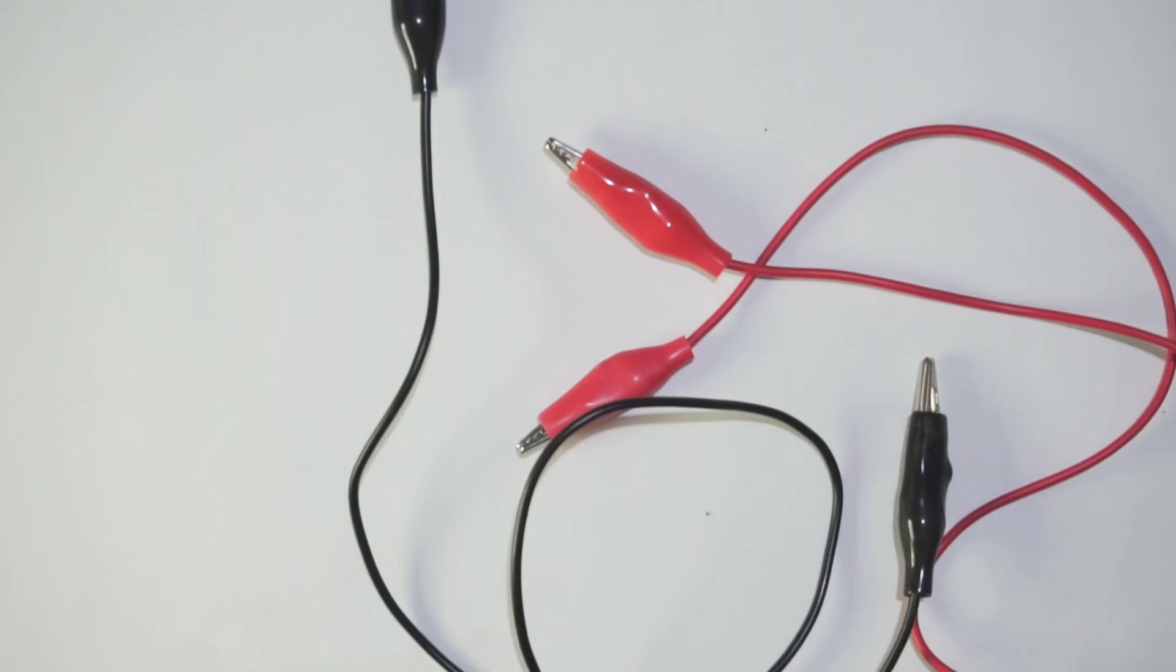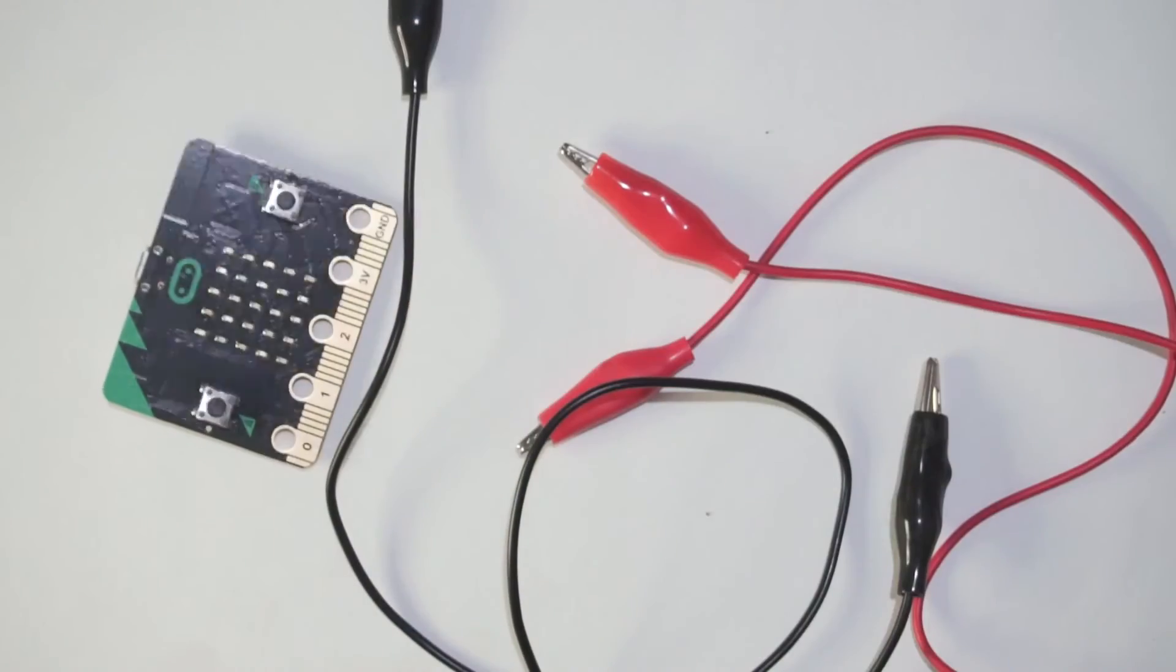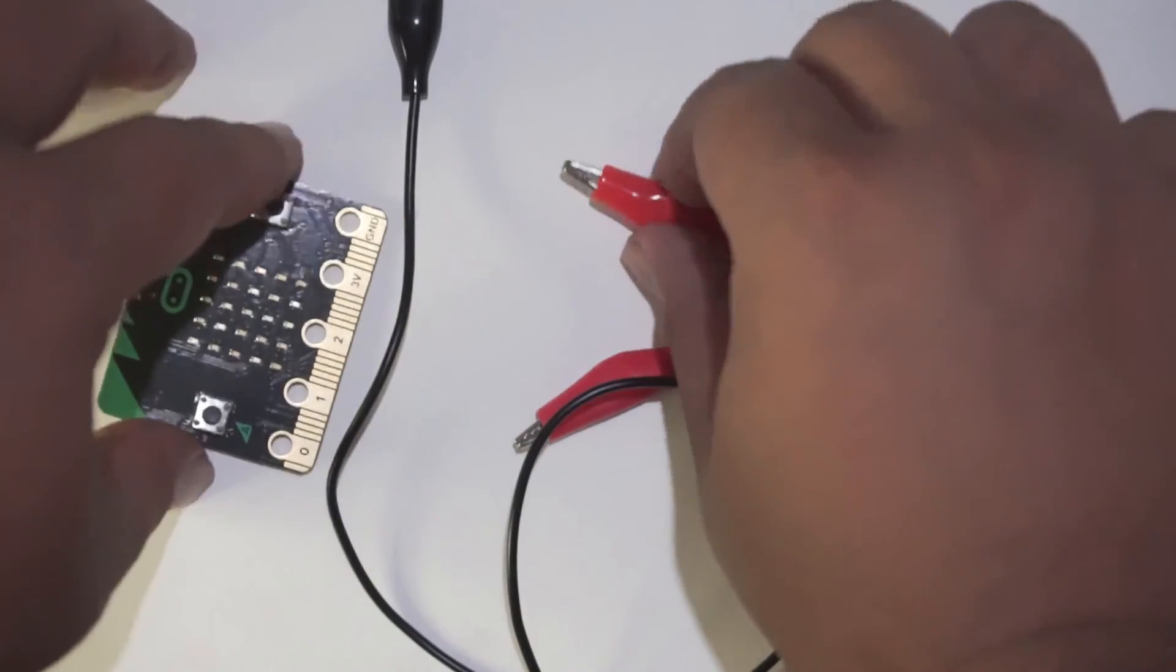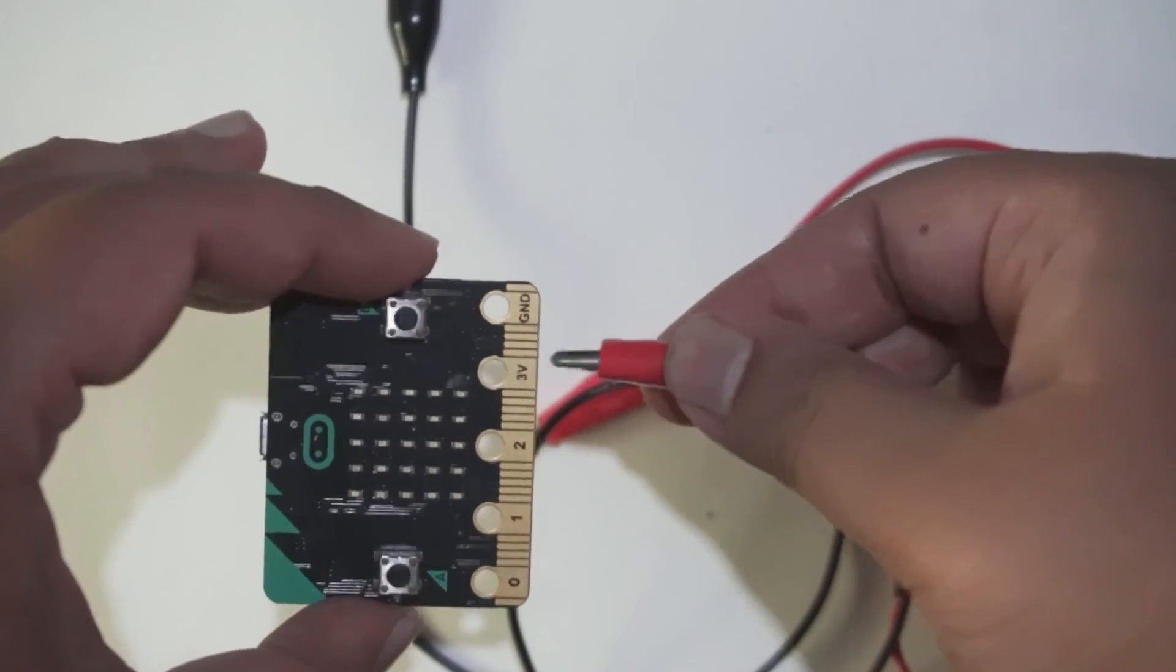And suppose if you have a board like BBC microbit, then you can definitely use alligator clips conveniently to connect various electronic components with BBC microbit.